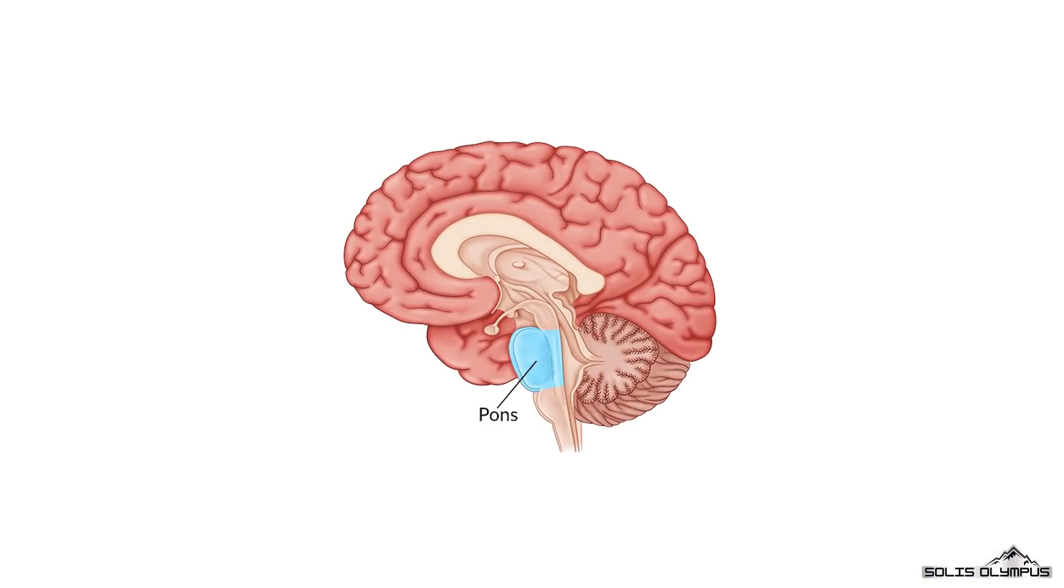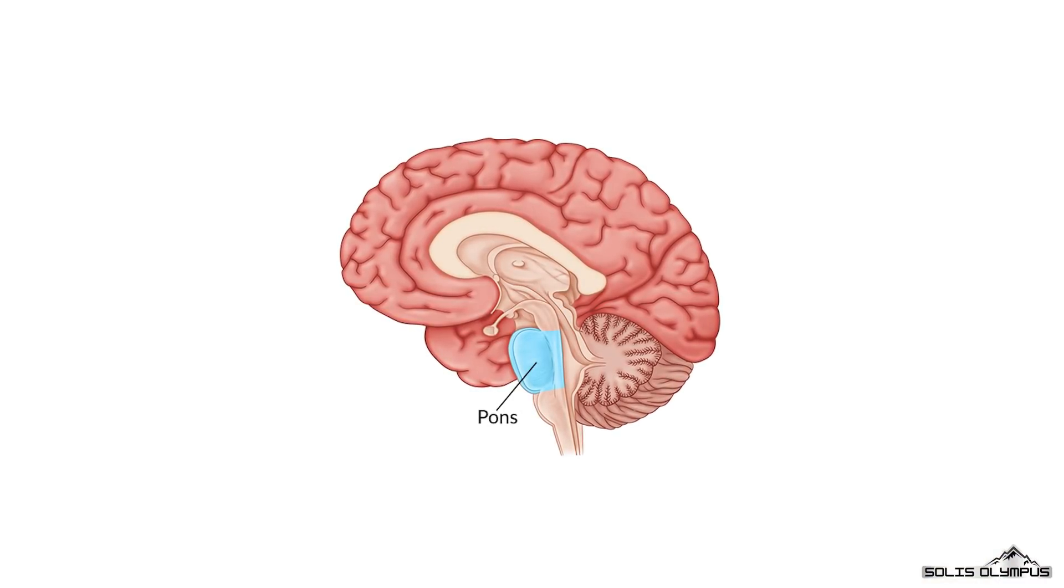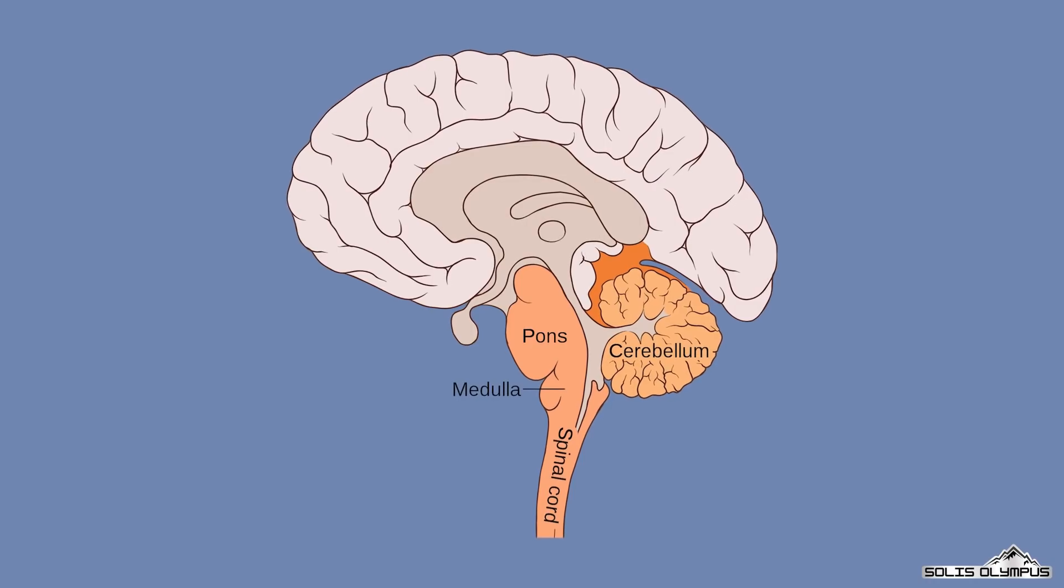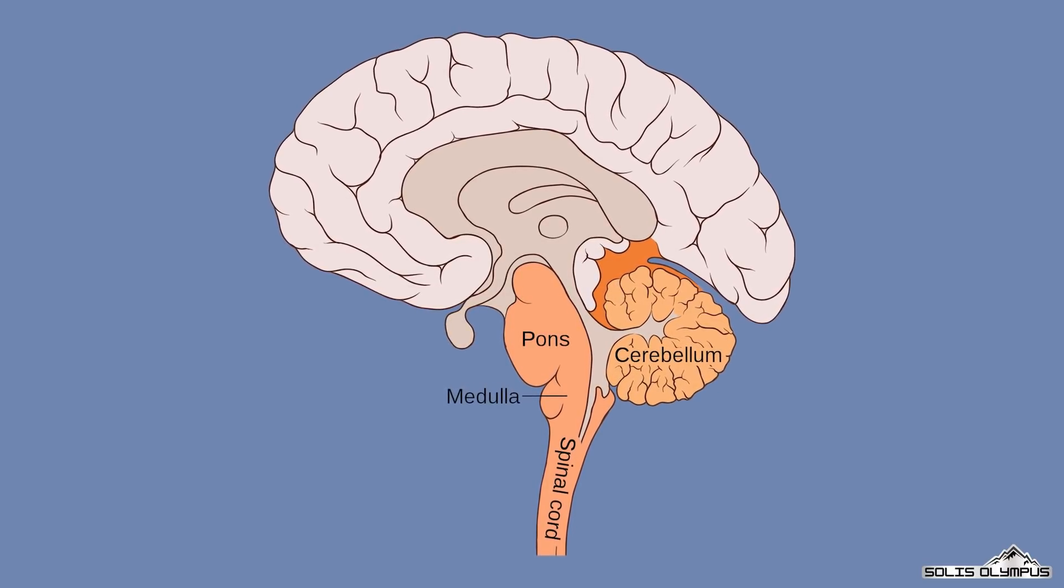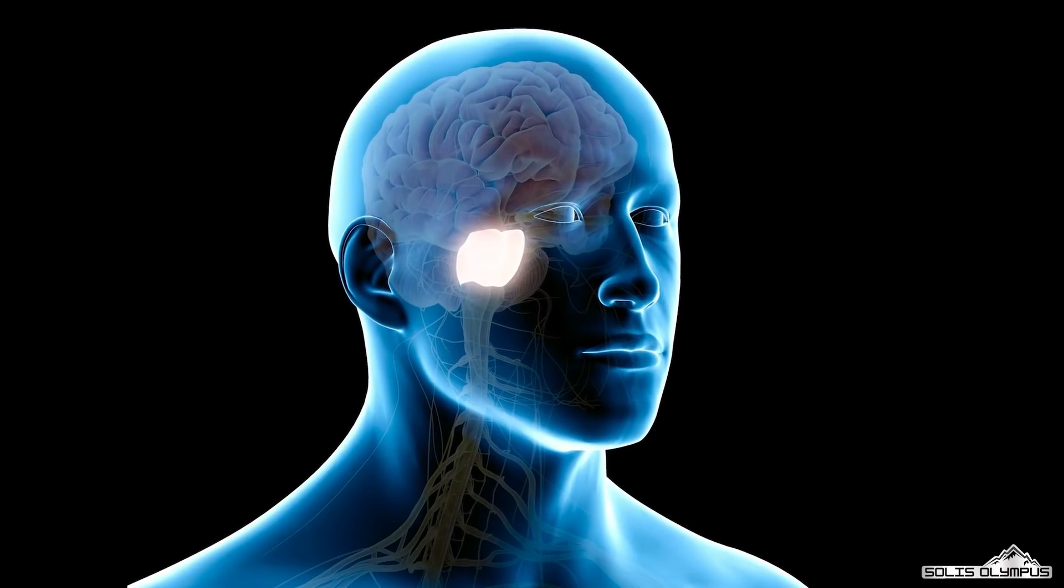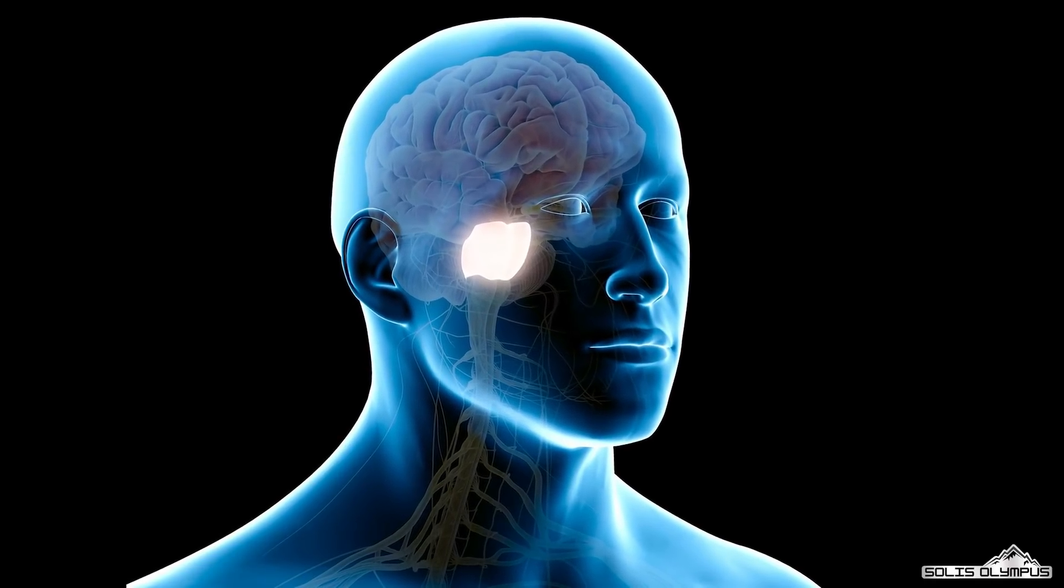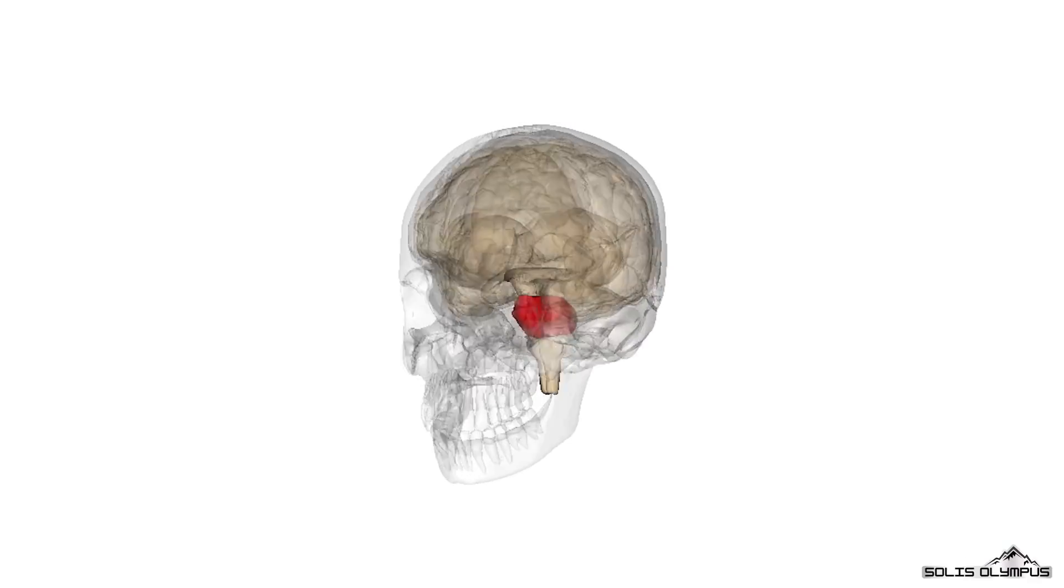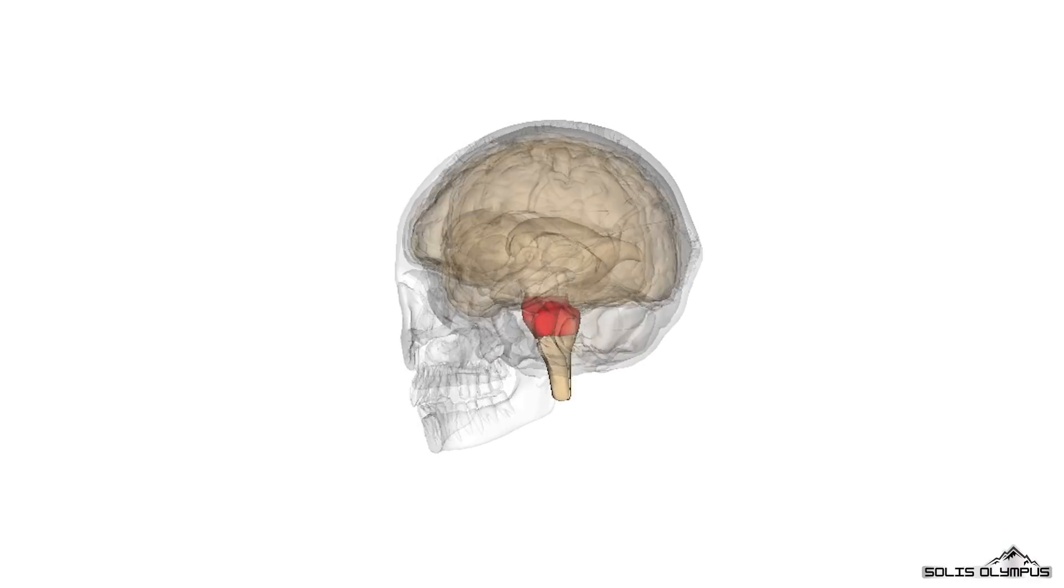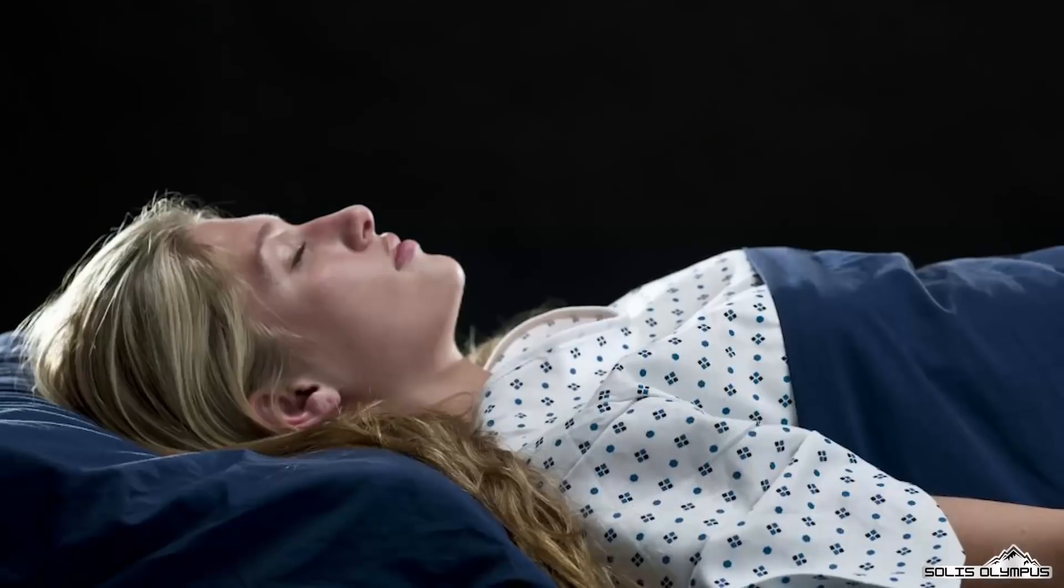Pons. The pons is located above the medulla and below the midbrain. Visually, it looks like an enlarged section of medulla oblongata, a portion of the brain below the pons. The pons plays an important role in the functioning of the automatic nervous system, like breathing and digesting. It also relays motor information between the cerebellum and cerebrum. Injury to the pons may result in impaired breathing and coma.